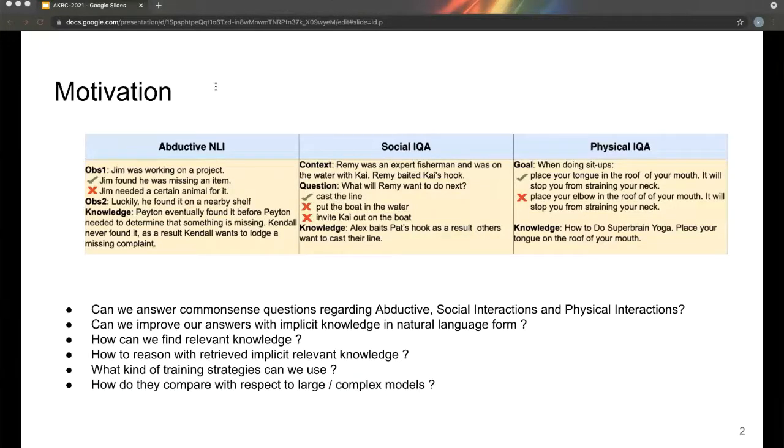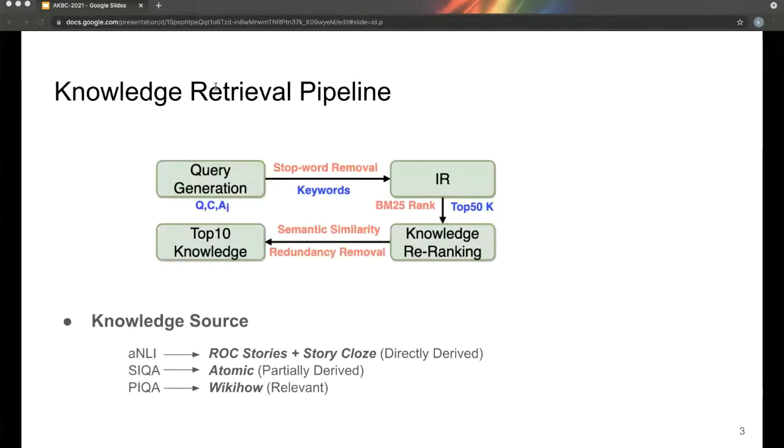In this work, we use three existing common sense reasoning datasets: Abductive NLI, Physical IQA, and Social IQA, to study how well transformer encoders like BERT and Roberta perform common sense reasoning with implicit knowledge in natural language form. First, we find out respective relevant knowledge sources for each of the datasets.